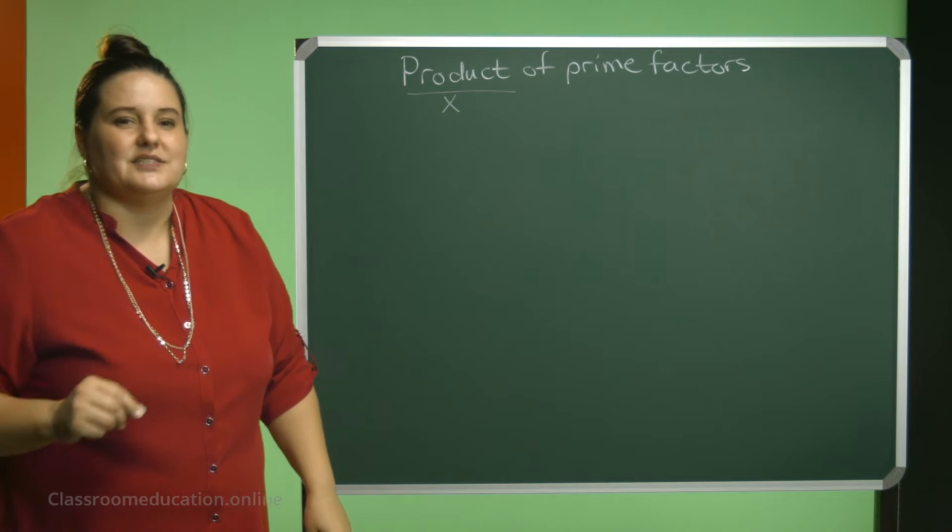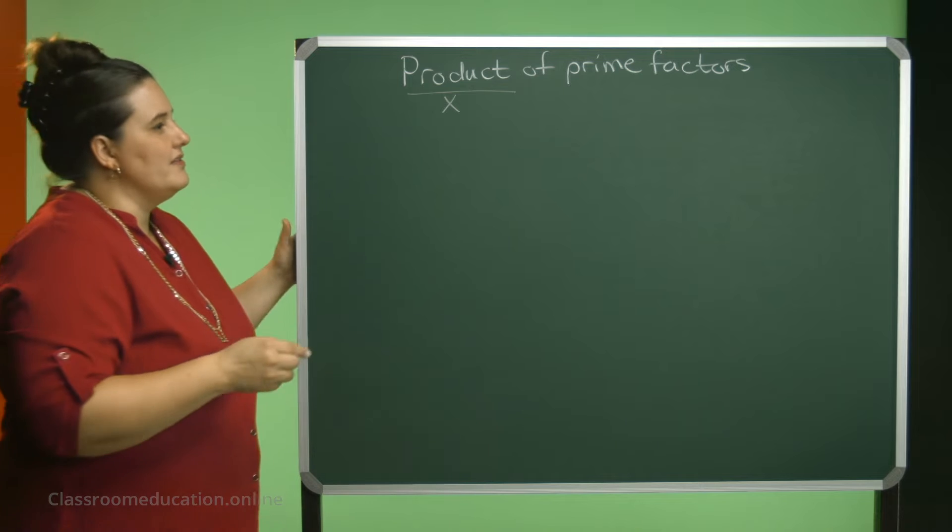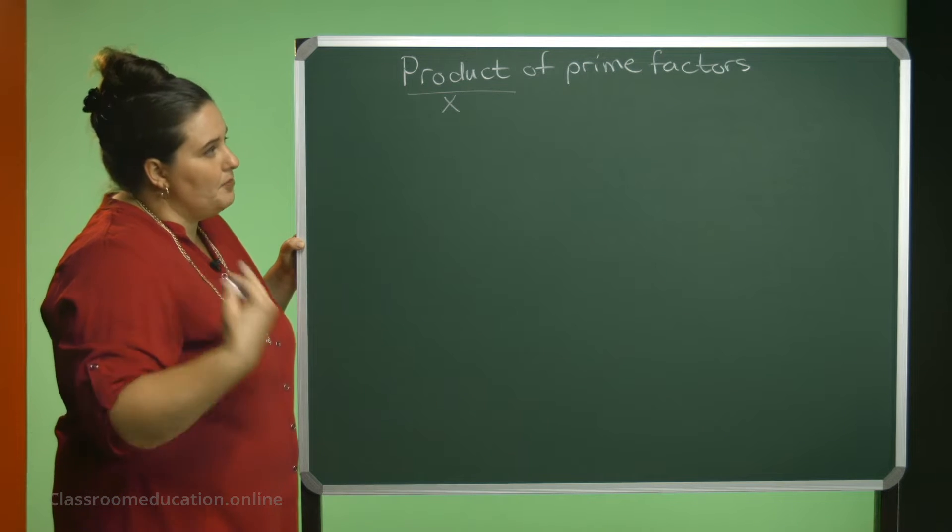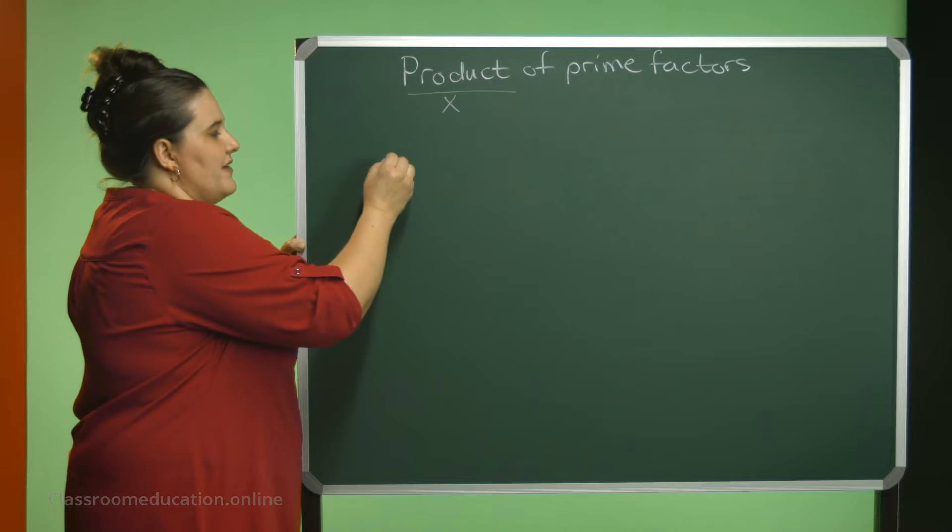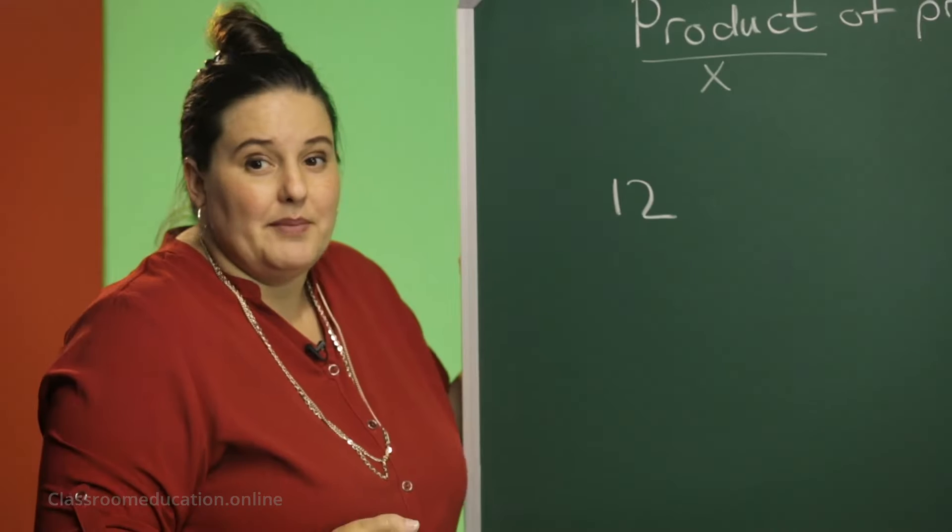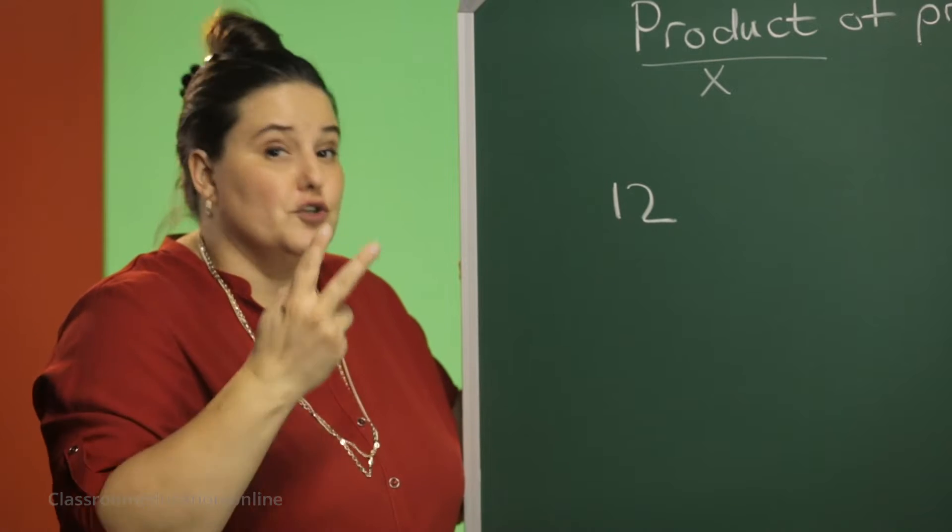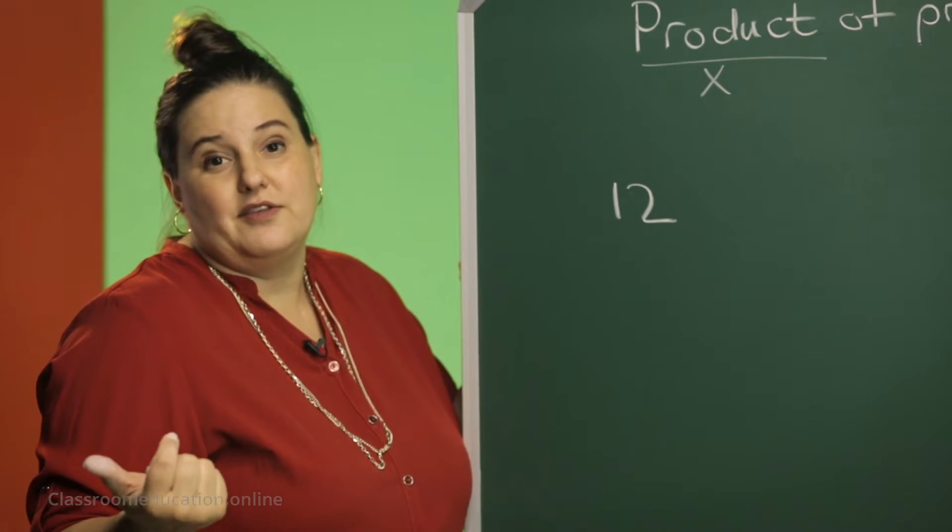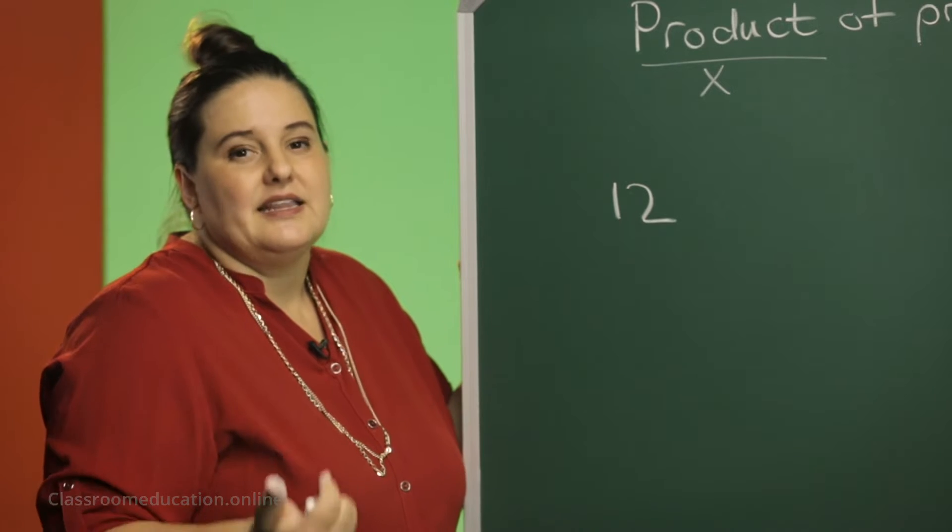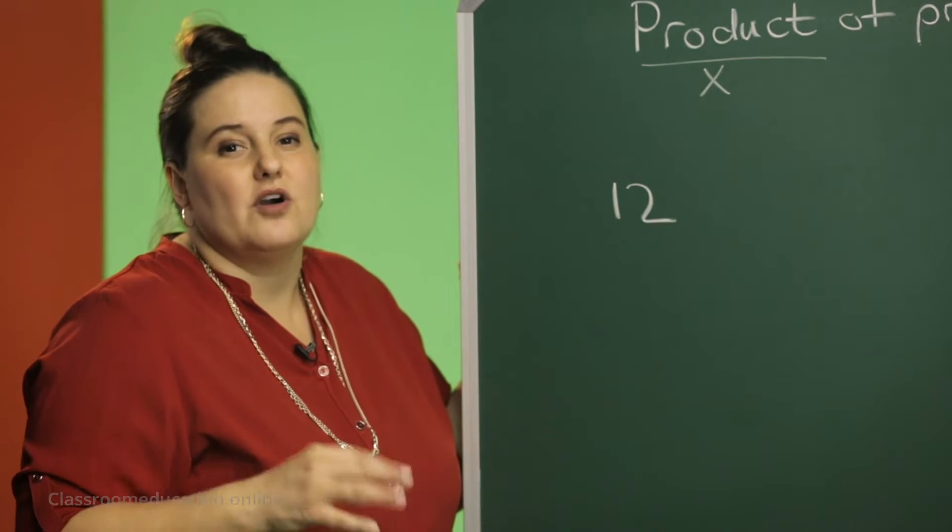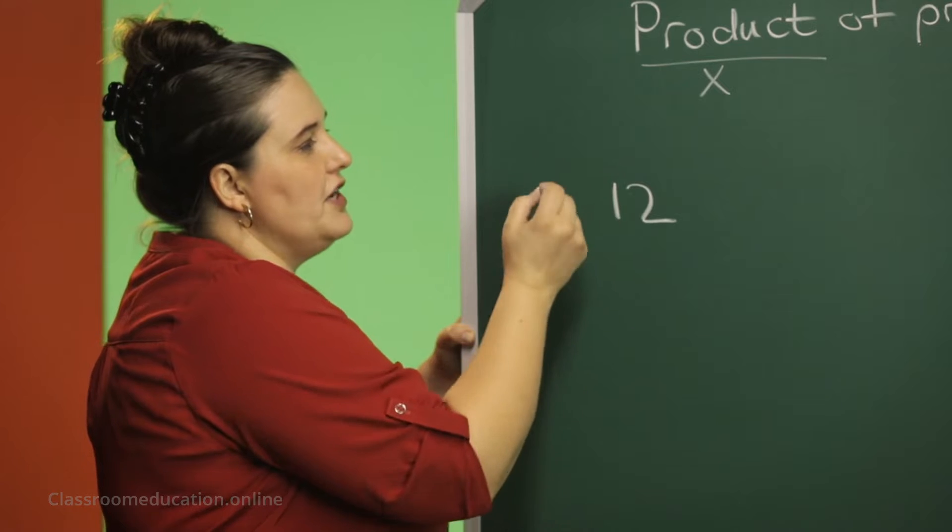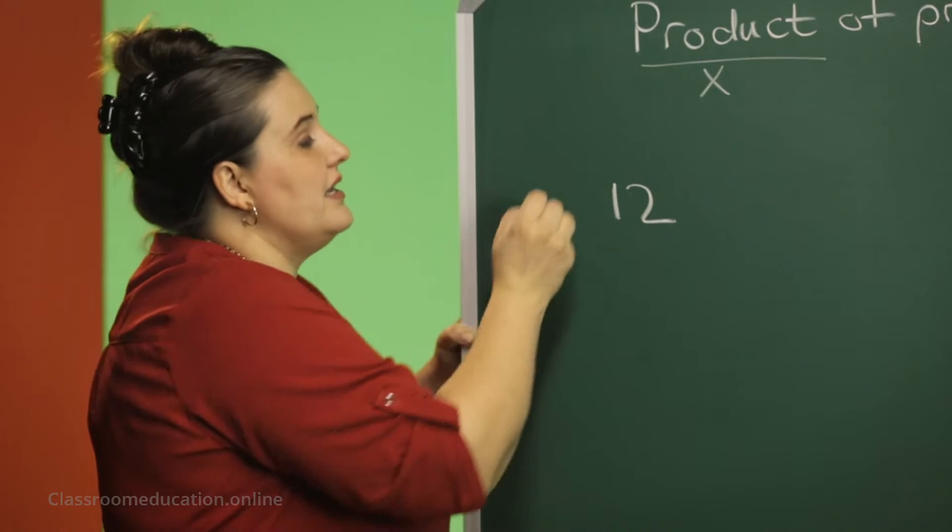Let's do an example. I want you to write 12 as the product of prime factors. There's actually more than one method, but I am going to show you two methods. One method you might have done in primary school already in grade 7. The other method is more common in high school grade 8 and 9. For the first method, we call it the tree diagram.